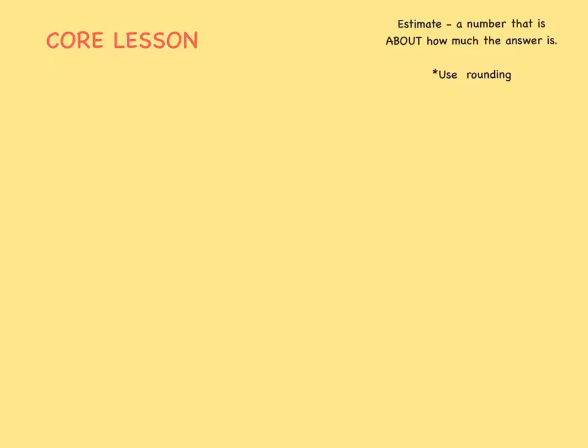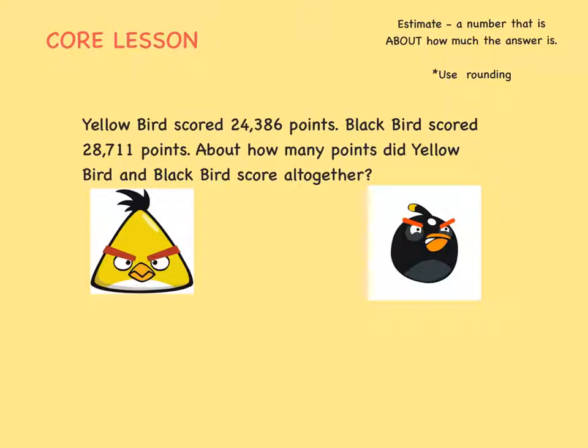Yellow bird scored 24,386 points. Black bird scored 28,711 points. About how many points did yellow bird and black bird score all together?